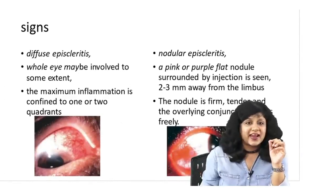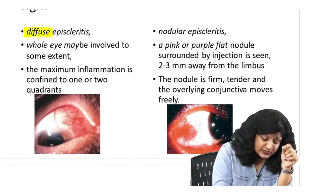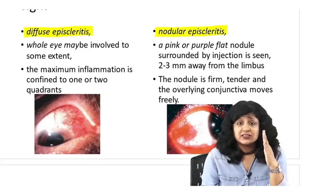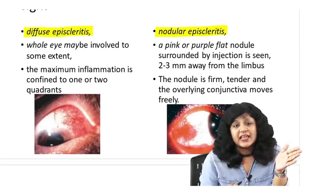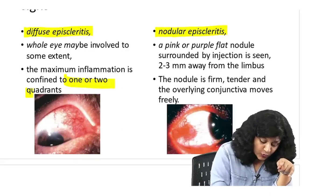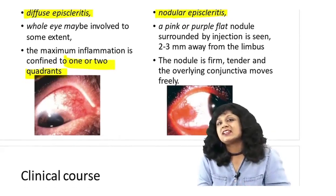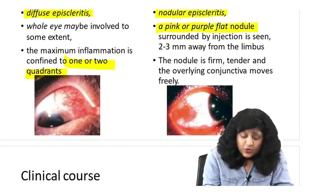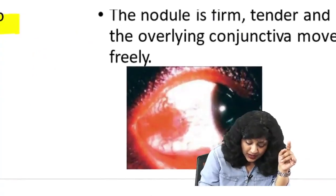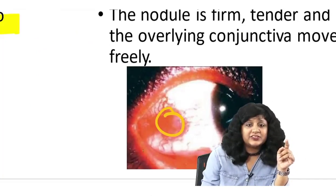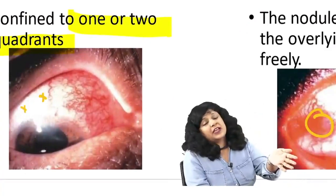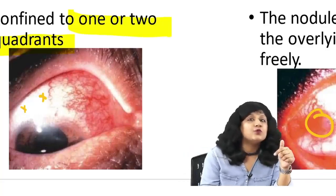Episcleritis is of two types: diffuse episcleritis and nodular episcleritis. In diffuse episcleritis, the whole eye is involved but maximum inflammation is found in only one or two quadrants. In nodular episcleritis, you get a pink or purple nodule surrounded by injection. You are getting a nodule with peripheral injection. In diffuse, a typical nodule is not formed; one or two quadrants may be involved but no discrete nodule.